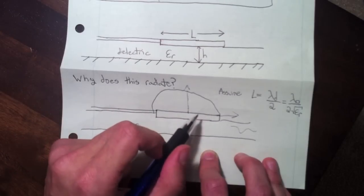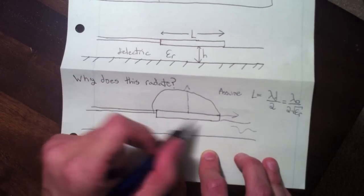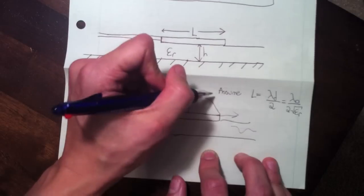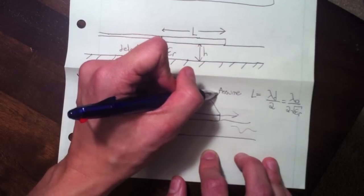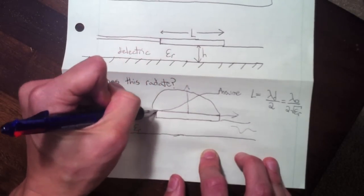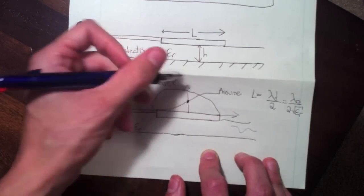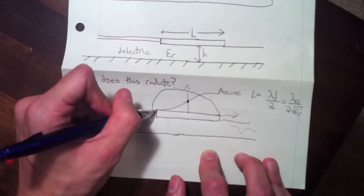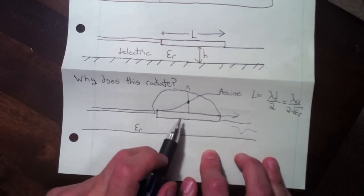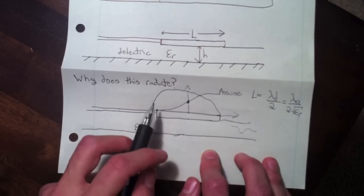Now what is the voltage distribution, the voltage from here to here that corresponds to this current? Well it turns out it has to be 90 degrees out of phase, which means the voltage will be a peak at the end, zero right at the center, and at a minimum at the start of the patch. It's actually key to the radiation of patch antennas to understand this voltage and current being 90 degrees out of phase.